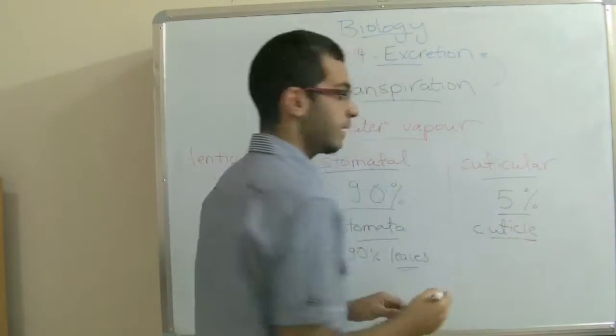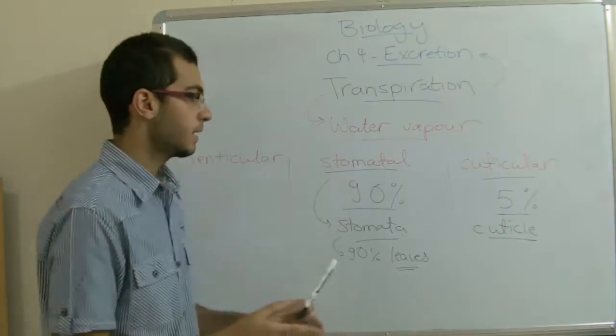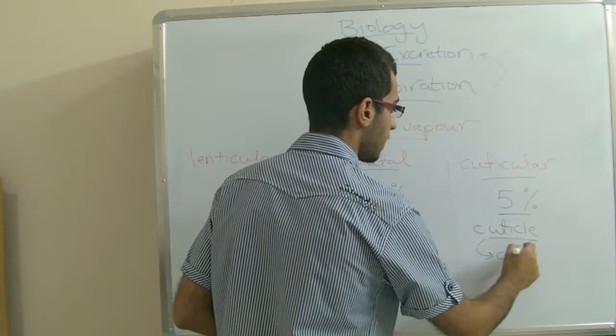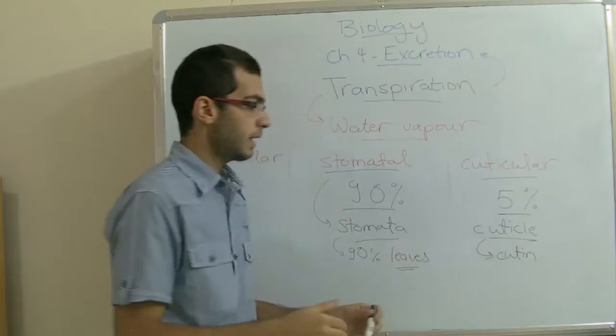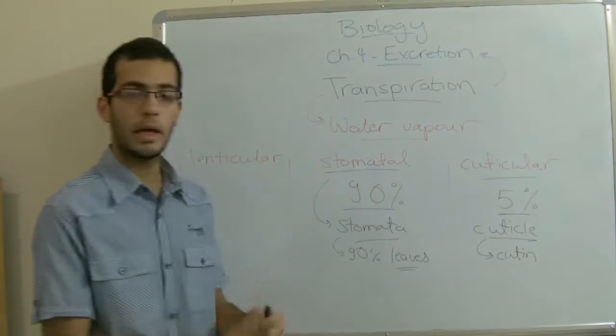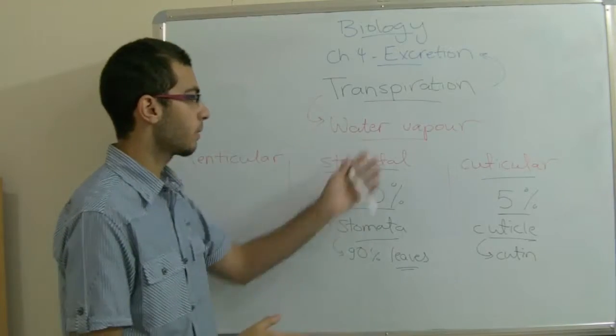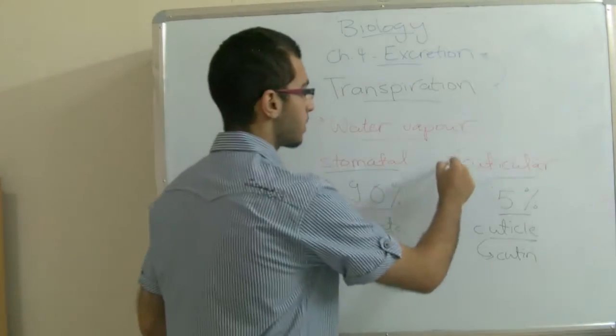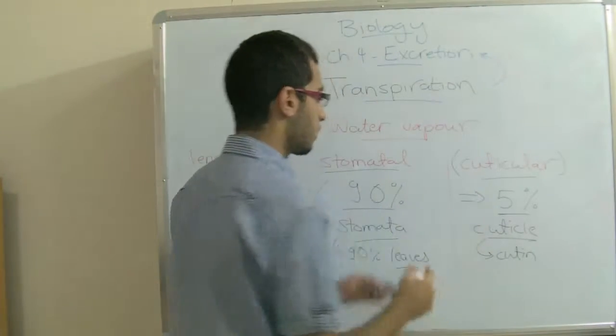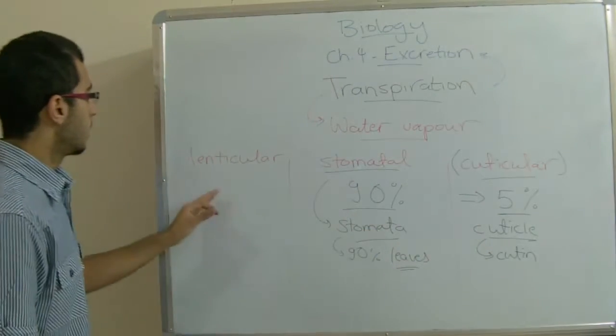Cuticle is the layer which covers the plant and this layer is made of cutin. So if some water leaked from this cutin layer in the form of water vapor, this type is called cuticular transpiration and it represents a small amount of the total transpiration.